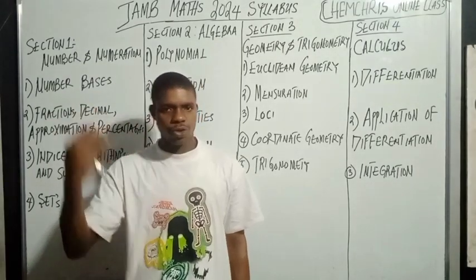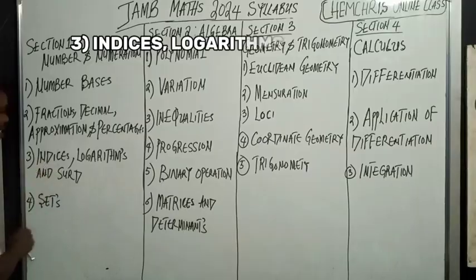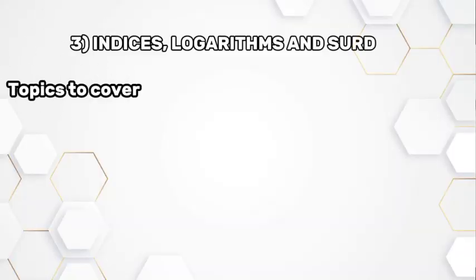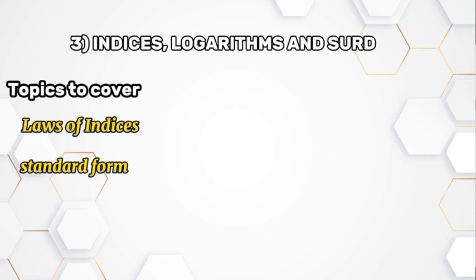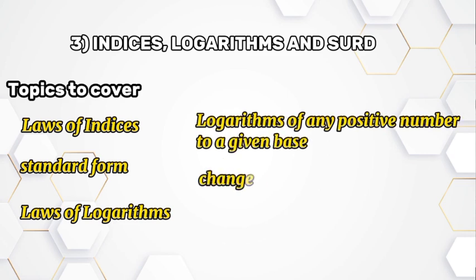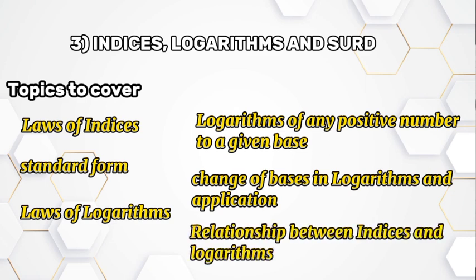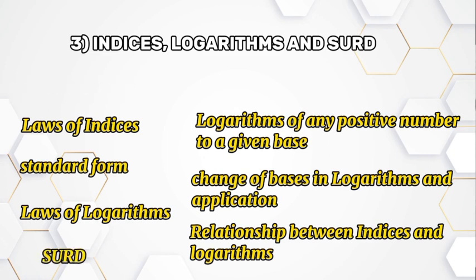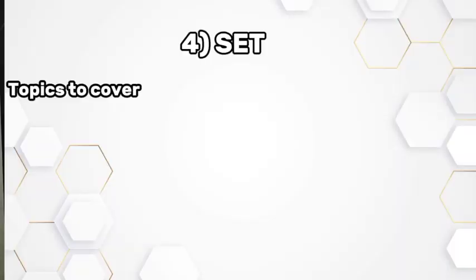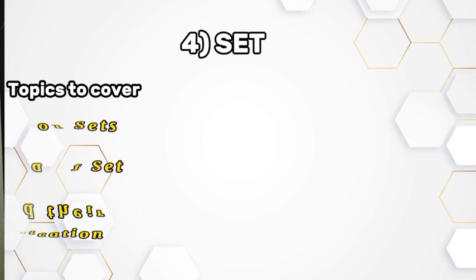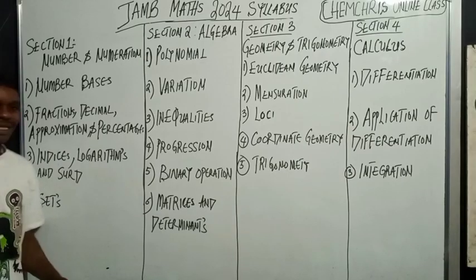It's very important to cover these topics. Now, under indices, logarithms, and surds: for indices, we have laws of indices and standard form. For logarithms, we have laws of logarithms, logarithms of any positive number to a given base, change of base in logarithms and application, and the relationship between indices and logarithms. Then you must cover surds. Under sets, you have types of sets, algebra of sets, Venn diagrams, and their applications.